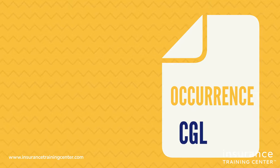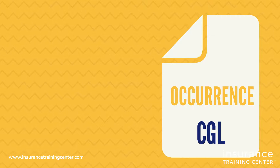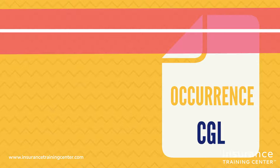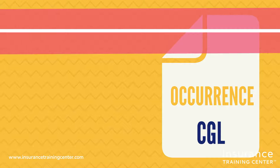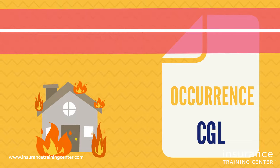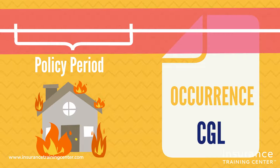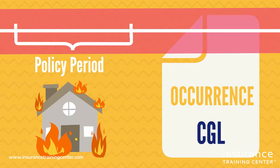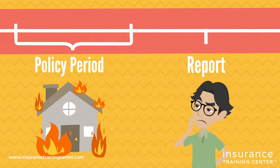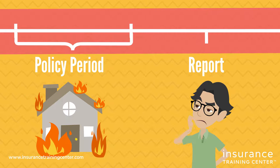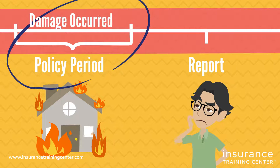For example, commercial general liability insurance policies are written on an occurrence basis. Under a CGL — the Commercial General Liability Policy — an event that gives rise to a claim, such as property damage, must occur within the policy period in order to be considered for coverage. So even if you don't discover and report the damage until later on, it may still be covered under the original policy, because that is when the damage happened.